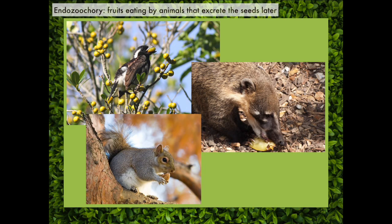Endozoochory is when fruits are eaten by animals, and then the animals fly, crawl, hike, or scamper somewhere else. Once the fruits pass through the gut, the fruit may be digested, but the seeds can come out and germinate in a suitable location far away from the mother sporophyte. Endozoochory is a very effective tactic, and many fruits dispersed this way tend to be fleshy. In the case of squirrels, you know how much squirrels love nuts.